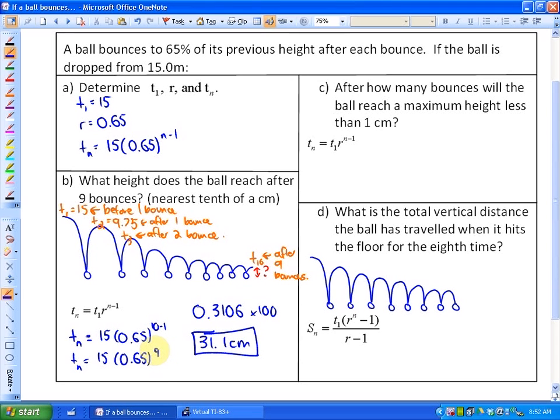The next problem says, after how many bounces will the ball reach a maximum height less than 1 centimeter? So we are trying to solve for n in this particular case. So we know that the height is going to be 1 centimeter. So if we're using meters, that's 0.01. And the height is going to be less than that.